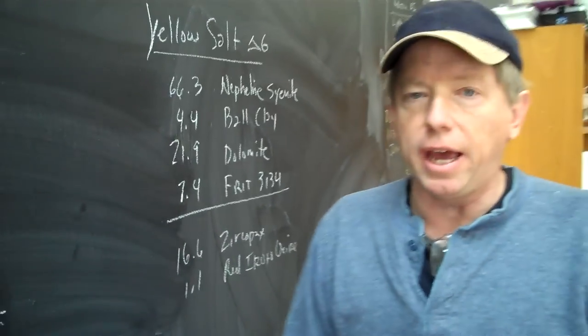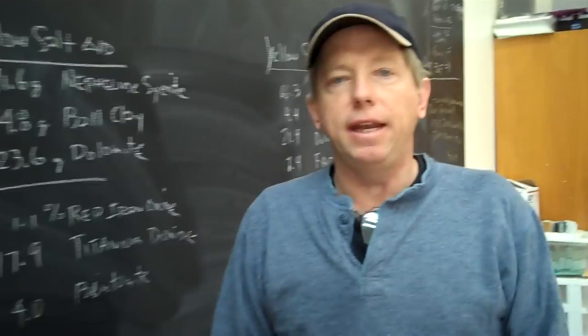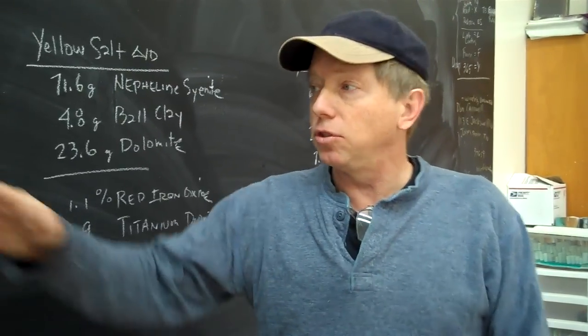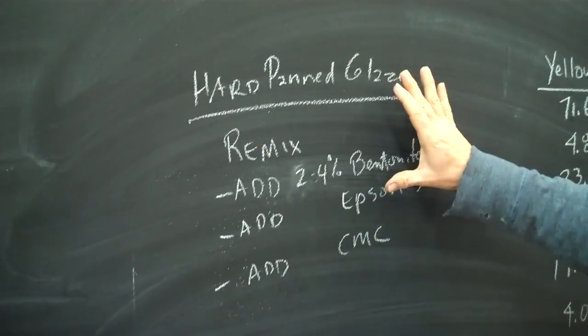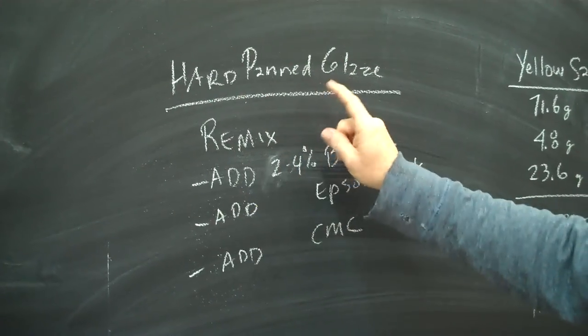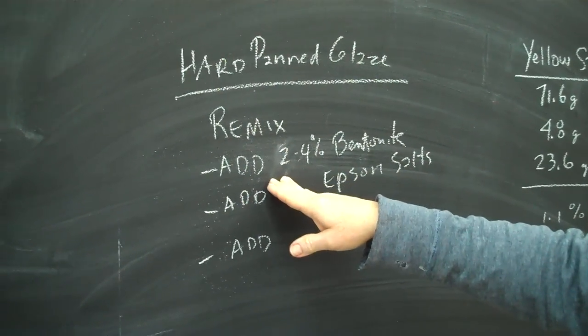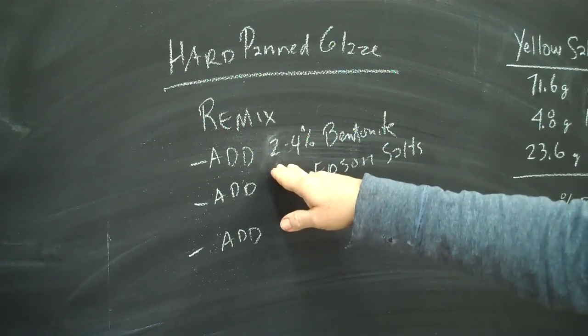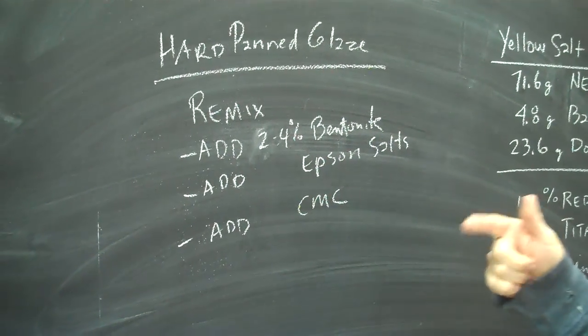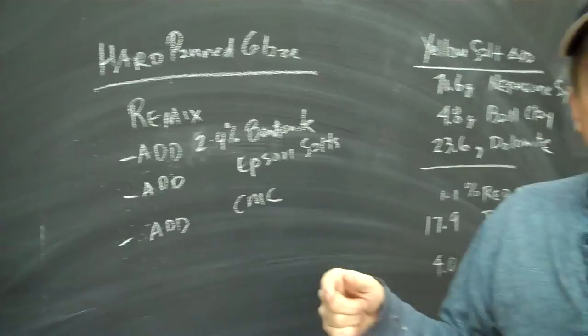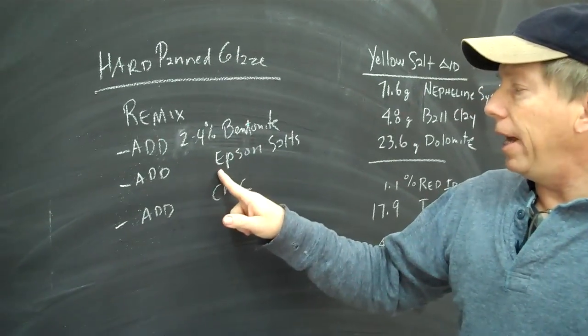So anytime you see that, you're going to probably have to add bentonite and epsom salts. So here's the way to do it. The first thing you're going to do if you glaze hard pans is you're going to remix it. And I'm going to show you how to do that in a minute. Then you're going to add 2-4% bentonite, stir it up. If that doesn't correct the problem, you're going to add a little bit of epsom salts.